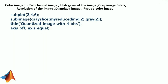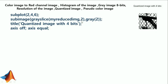Next, we convert the gray image to a quantized image using grayslice. grayslice converts a grayscale image to an indexed image using multi-level thresholding. The thresholding level is 2, meaning 2 to the power of 2 equals 4, so the quantized image has 4 gray levels. The title is 'Quantized Image with 4 Bits'. We use subplot(2, 4, 6) — sixth position in two rows and four columns.